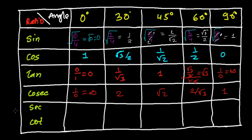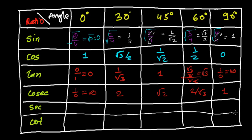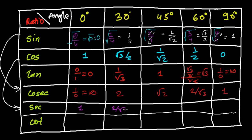For secant, cosine is the reciprocal relationship — secant is the reciprocal of cosine. So sec 0° = reciprocal of 1 = 1. Sec 30° = reciprocal of √3/2 = 2/√3. Sec 45° = reciprocal of 1/√2 = √2. Sec 60° = reciprocal of 1/2 = 2. Sec 90° = 1/0, which is again undetermined.